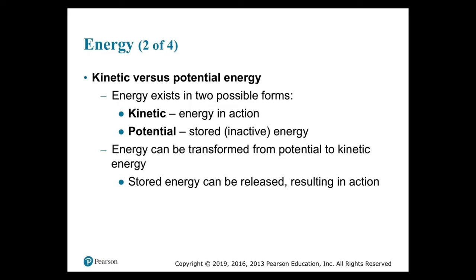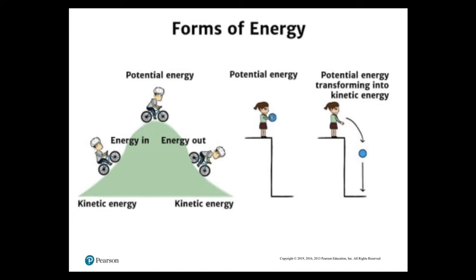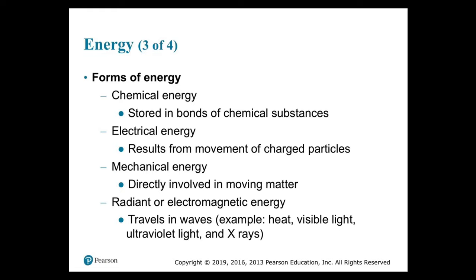Energy can be transformed from potential to kinetic energy, and stored energy can be released resulting in action. Kinetic energy must be used in climbing a hill; the resulting potential energy is converted back into kinetic energy when the person bikes down the hill, and that kinetic energy can then be used to perform work. Chemical energy is the form stored in the bonds of chemical substances. When chemical reactions rearrange atoms, the potential energy is unleashed and becomes kinetic energy in action. Electrical energy results from the movement of charged particles in your body.